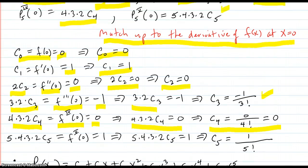And then the last one. The fifth derivative of the polynomial at zero is this, and that has to match up to the fifth derivative of f at zero, which is one. So all this equals one. Dividing over, c five equals one over five factorial.